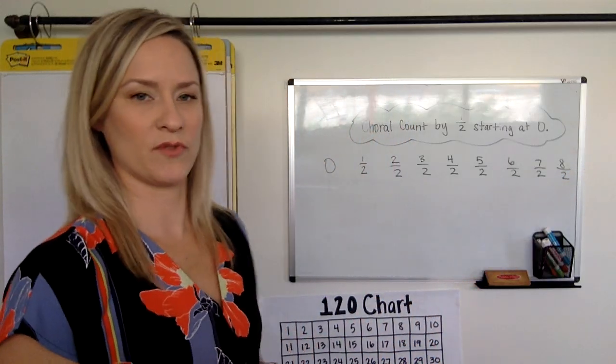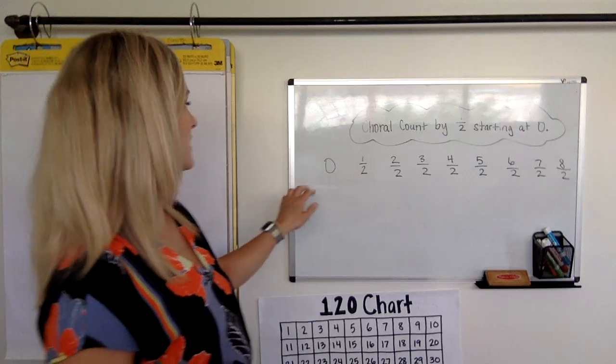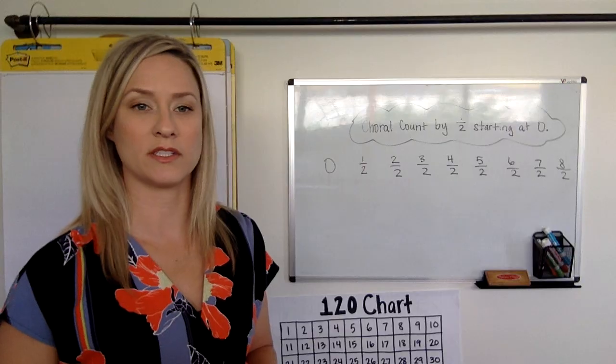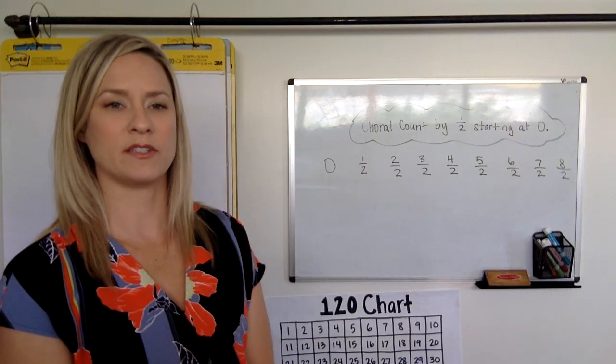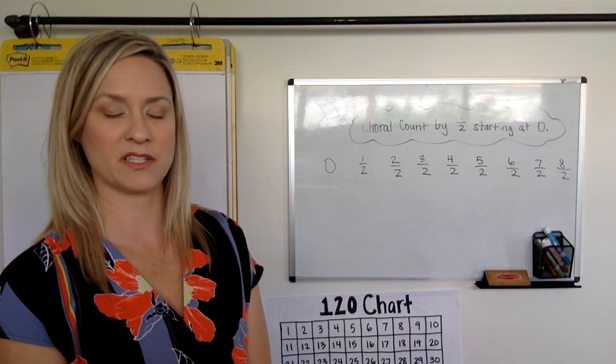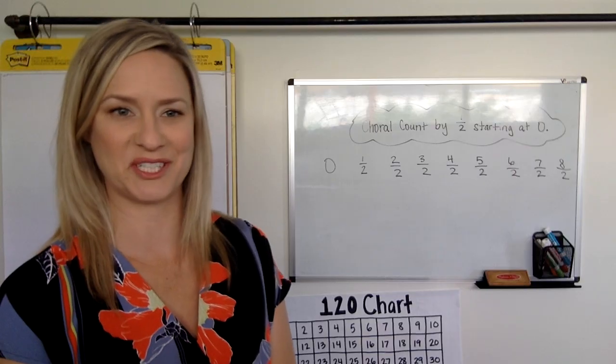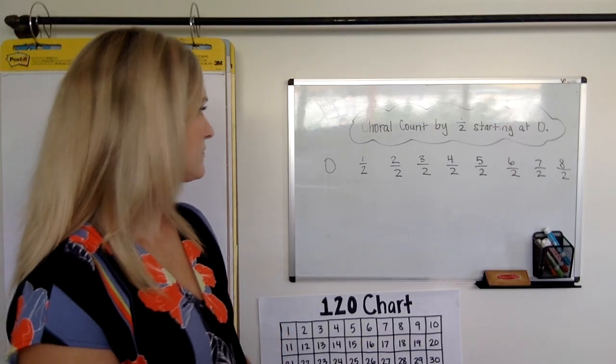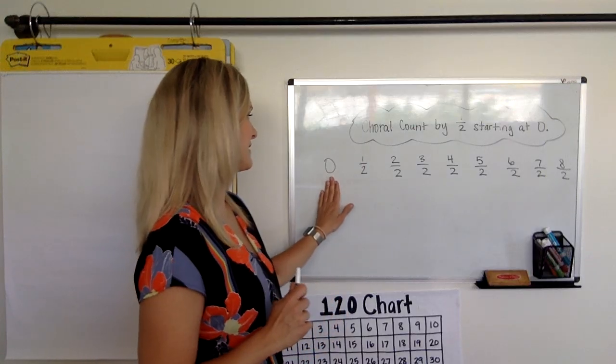What do you notice here? What do you notice? We've got zero, one half, two halves, three halves, four halves, so on. So what do you guys notice? You can tell me in the comments or you can tell me in Google Classroom if your teacher posts it there. What do you notice here? I bet you notice that it starts at zero.